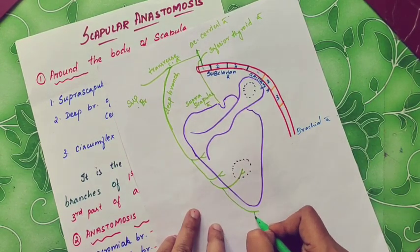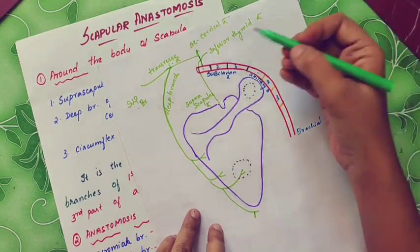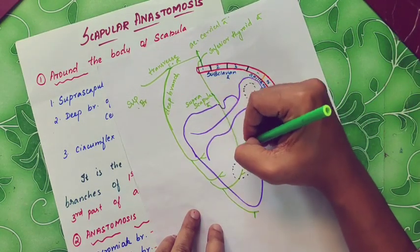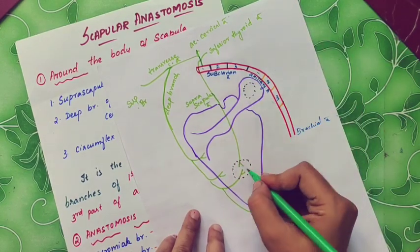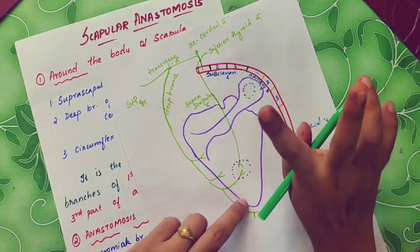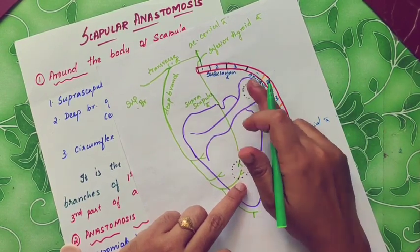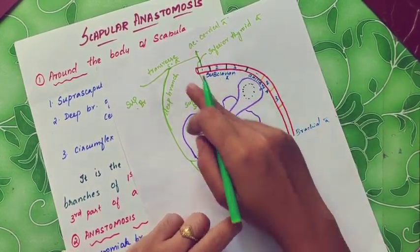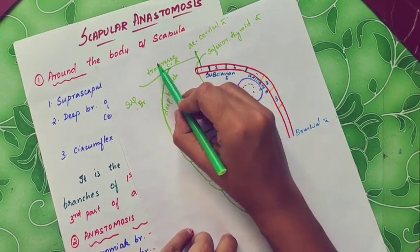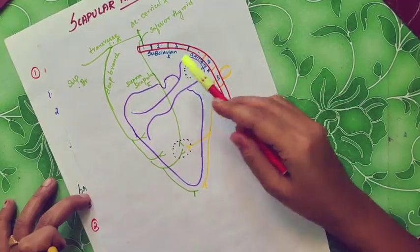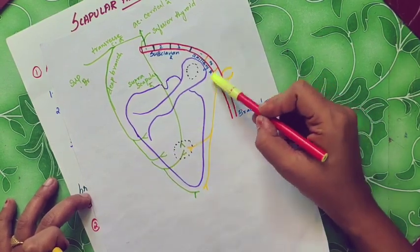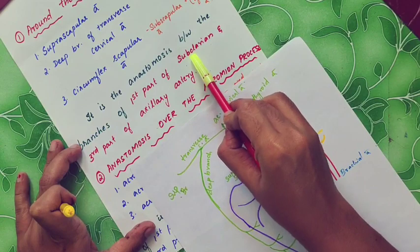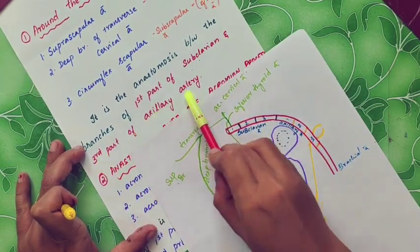The suprascapular artery is giving a branch here. For anastomosis, three arteries meet up. We have two arteries from the first part of the subclavian artery: the suprascapular artery and the deep branch of the transverse cervical artery. The third part of the axillary artery provides the third contribution.